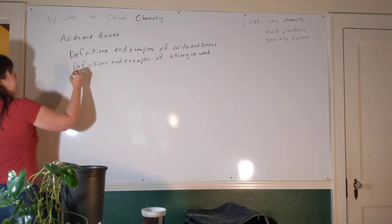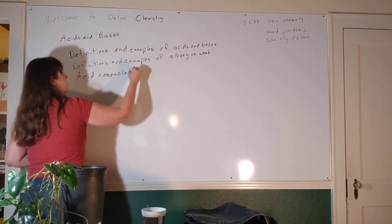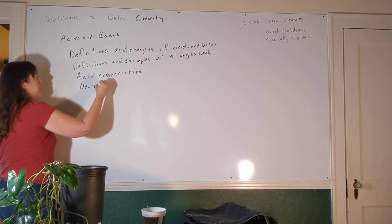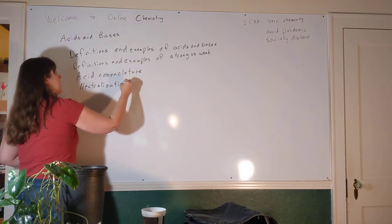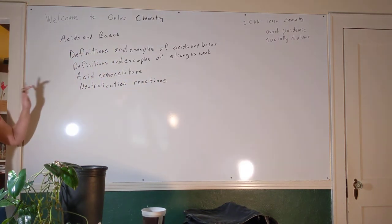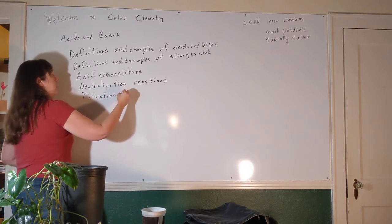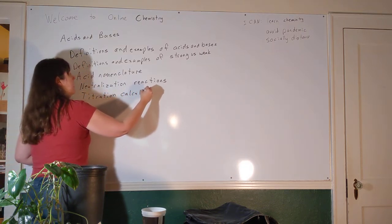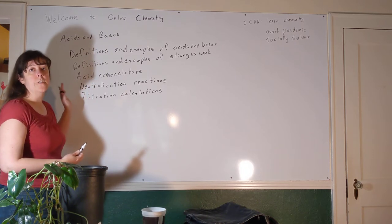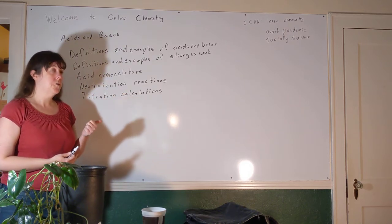I'm also going to expect you to be able to name acids. I expect you to be able to write and balance neutralization reactions. So this is just neutralization reactions qualitatively. I also expect you to be able to do titration calculations. Obviously these two go together. The titration reactions that we do are neutralization reactions, but here I'm talking about just qualitatively writing and balancing them, maybe doing the complete and net ionic equations, which we also did in class.